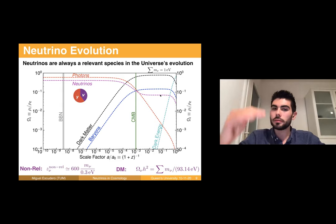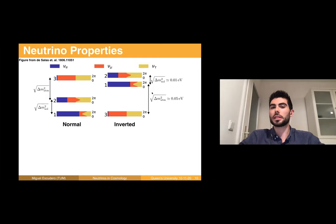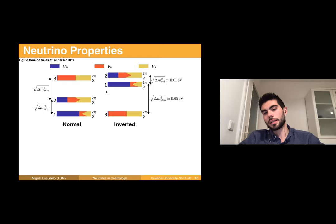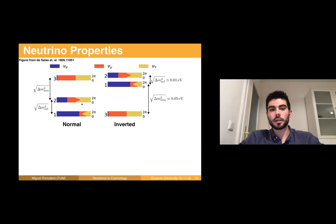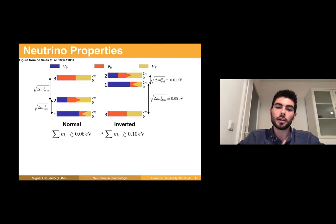The takeaway is that neutrinos are always a relevant species: 40 percent of the early universe, and in the late universe they constitute a relevant energy density depending on their masses. What we know about neutrinos is that they are mixed, and at the moment we don't know whether they have a normal or inverted hierarchy. We have measured the mass differences and mixing angles very well, and this allows us to set a minimum prediction for the sum of neutrino masses: larger than 0.06 eV for normal ordering and larger than 0.1 eV for inverted ordering.